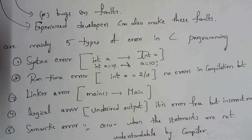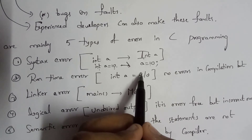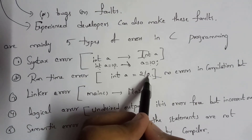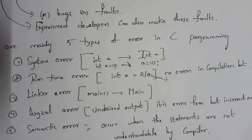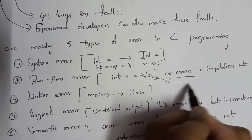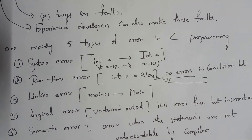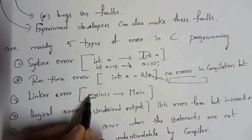The second type is a runtime error. A runtime error occurs when you compile your program with Alt+F9 and it shows no error, but after executing the program you get no output. For example, if you write 'int a = 2 / 0', it will not show any error during compilation, but after executing the program you will not get output because dividing any number by 0 gives an undefined result. This is known as a runtime error.